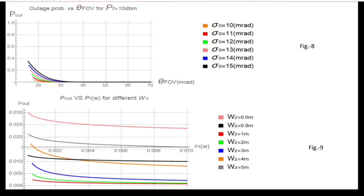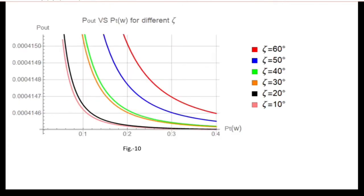Figure 9 investigates the performance of the considered link when the beam width Wz varies. For a given pointing error variance, the outage performance largely depends on Wz, and increasing Wz does not necessarily decrease the outage probability. Figure 10 is plotted using the optimal value of Wz and field of view, showing the effect of increasing irradiance fluctuations and beam wander caused by increasing link length or equivalently increasing zeta. Studying all these figures, we conclude that these results can be used for finding the optimal value of link parameters and designing a ground-to-HAP FSO link without time-consuming simulations.